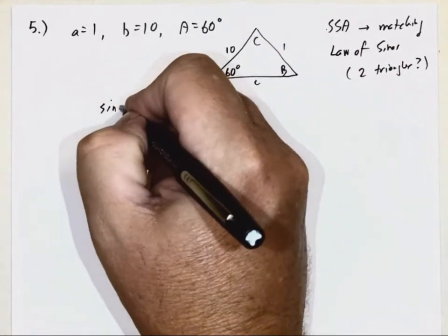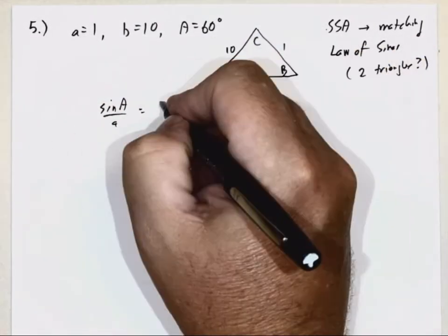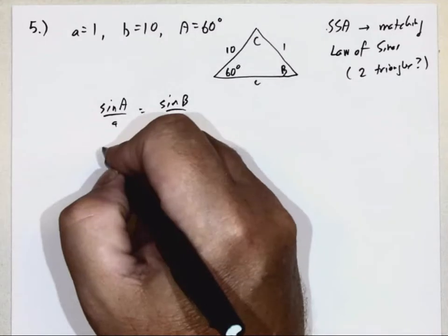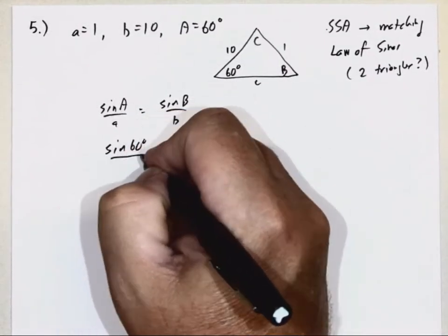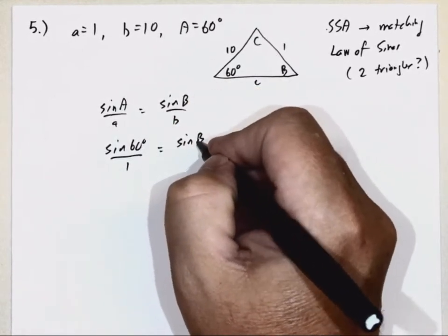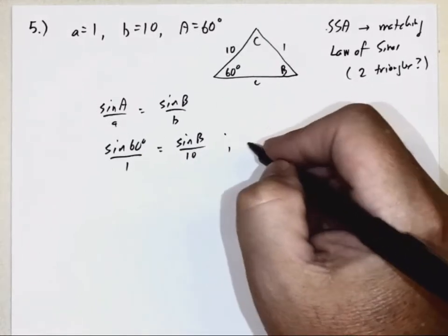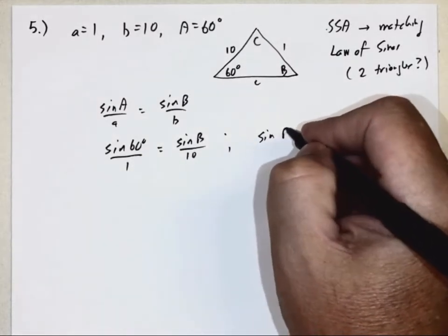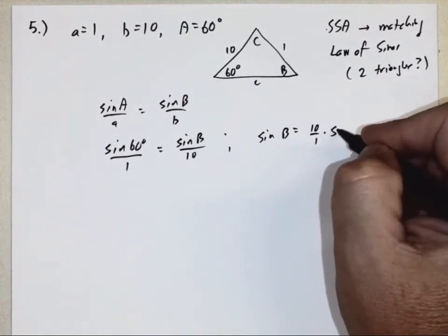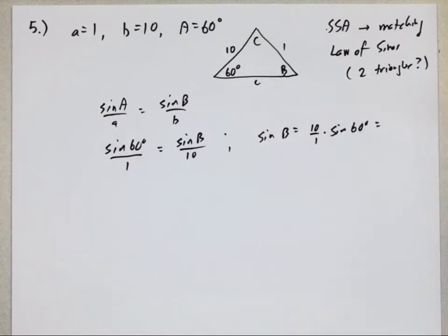Use law of sines, sine of A over side A, sine of B over side B. And I know, since A is 60 degrees and side A is 1, I don't know angle B, but I do know side B is 10. I can solve this for sine B, 10 over 1 times sine of 60 degrees. Grab my calculator, make sure I'm in degree mode.